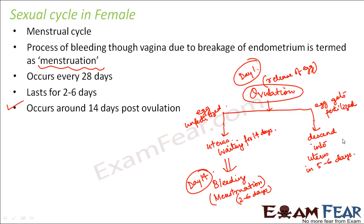Throughout the nine months of pregnancy there is no menstrual bleeding, because the endometrial lining is very much needed to support the baby and therefore cannot break. If the endometrial lining does not break, there is no bleeding and no menstruation. That is how and why menstruation takes place.